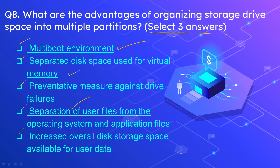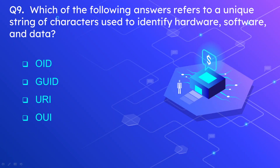Question number 9: Which of the following answers refers to a unique string of characters used to identify hardware, software, and data? The options are OID, GUID, URI, and OUI. The correct option is GUID.